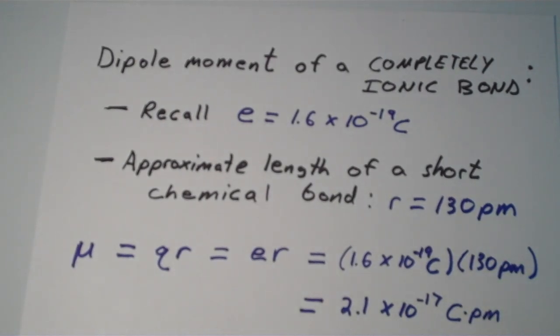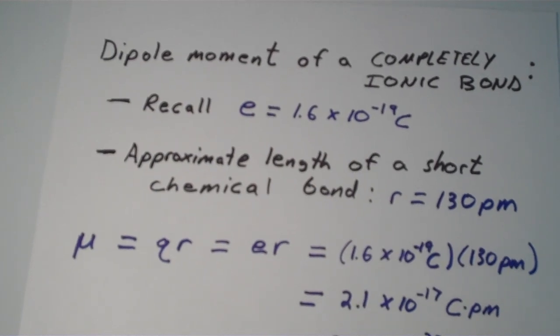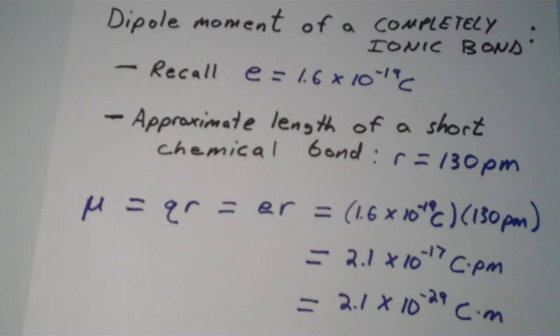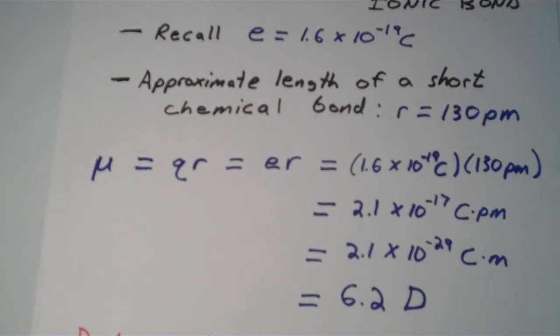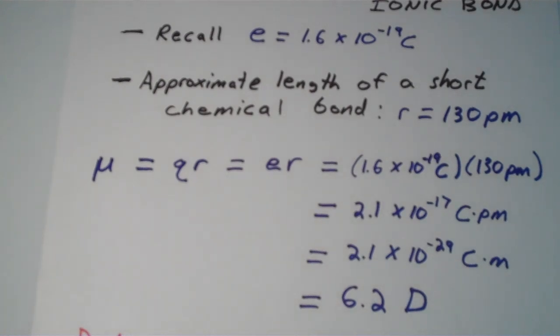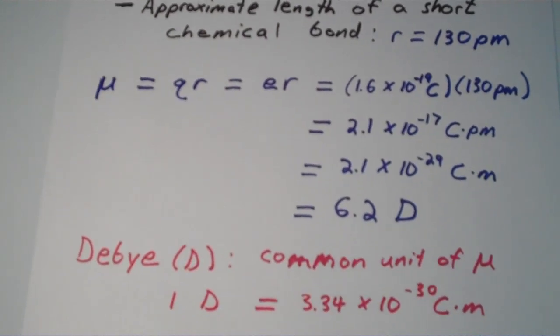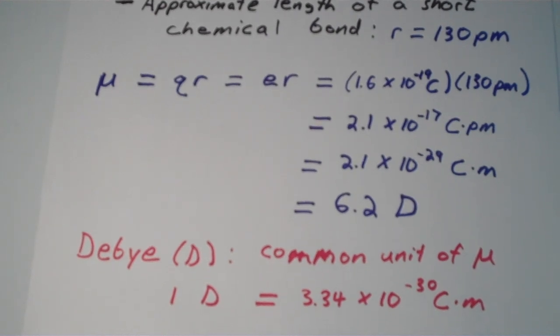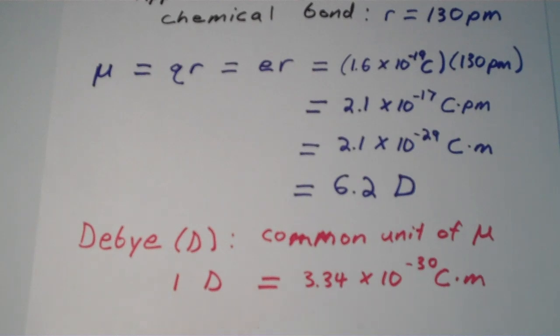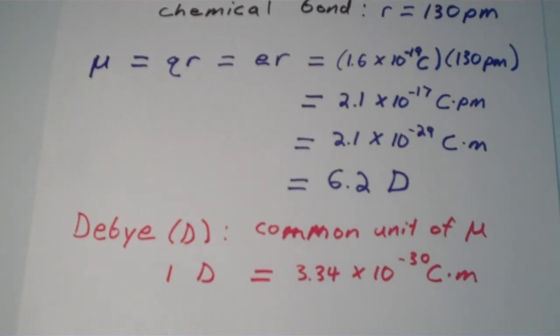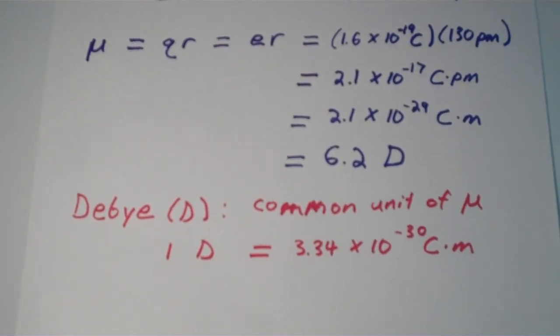Let's see if we can't get this into SI units. I've already done the conversion, but you can verify yourself that if you convert this to coulombs times meters, you'll get 2.1 times 10 to the negative 29th. This quantity is actually equal to 6.2 Debyes. The Debye is a common unit for a dipole moment, for reporting dipole moments. 1 Debye is equal to 3.34 times 10 to the negative 30 coulombs times meters.